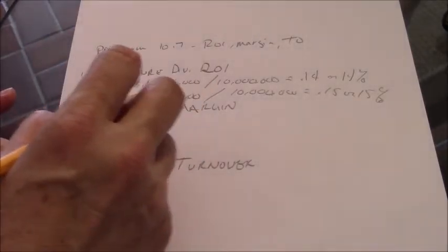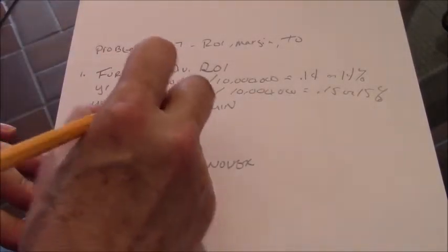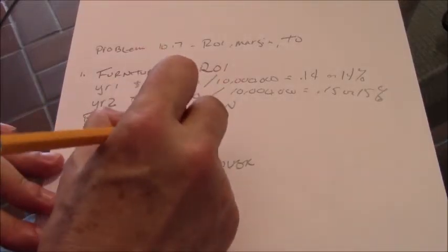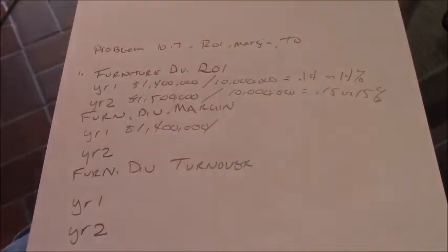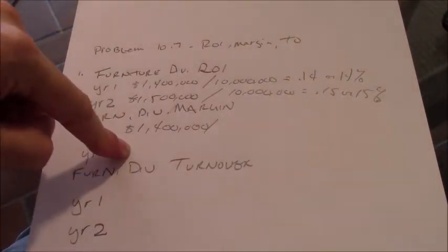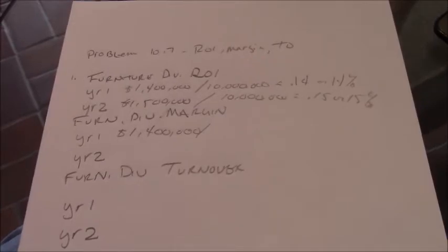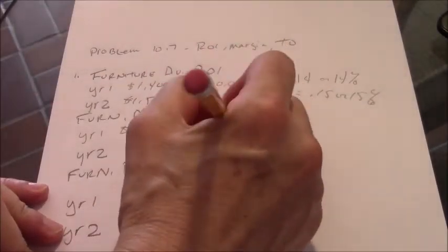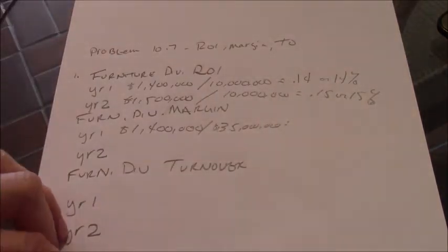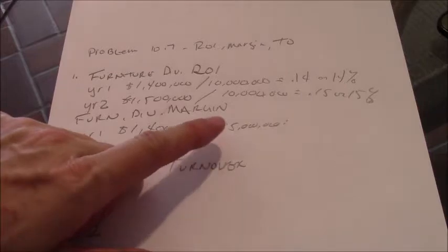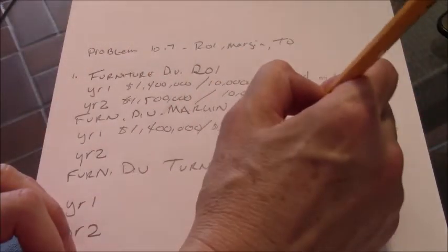For Furniture Division Year 1, we had that 1.4 million in operating income. The sales is 35 million. So 1.4 million divided by 35 million is 4%, or 0.04.